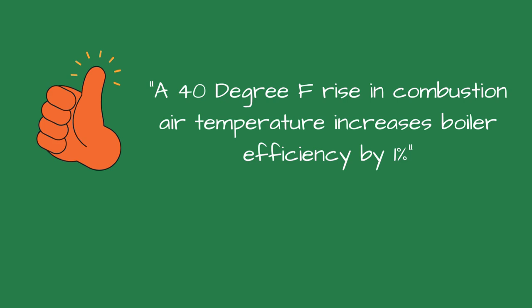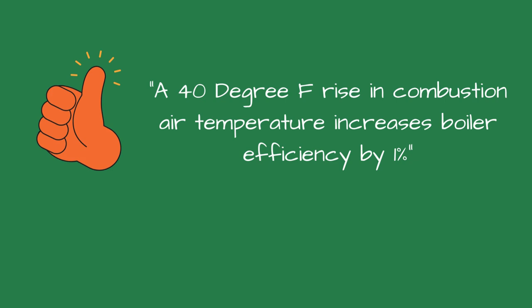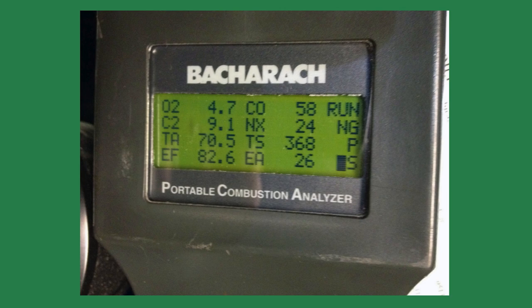An industry rule of thumb suggests a 40 degree rise in combustion air temperature results in a one percent increase in boiler efficiency. The problem occurs if you had the same teacher as I did — I was taught to always set the boiler air to fuel ratio on the coldest days. On a warm day, the hydronic loop heats quickly or the steam pressure rises and shuts off the boiler, and it takes forever for the loop temperature or pressure to drop and the boiler to restart.